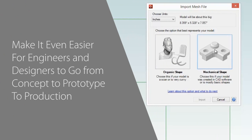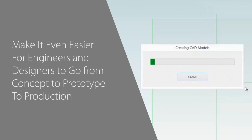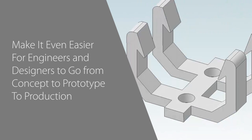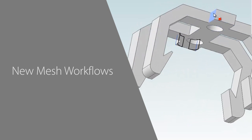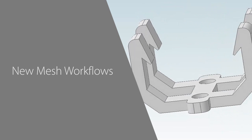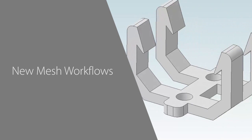Geomagic Design has been updated for 2014 with new improvements that make it even easier for engineers and designers to go from concept to prototype to production. For the first time, users can import mesh data into Geomagic Design and convert it to a solid body to design new parts around or merge with another design.